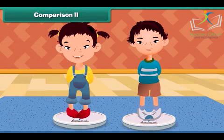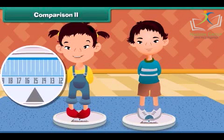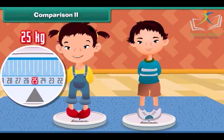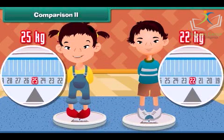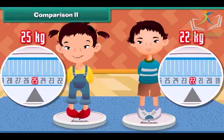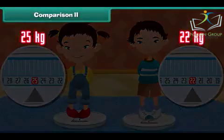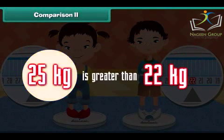Two children measure their weight. The weight of the first child is 25 kilograms and the weight of the second child is 22 kilograms. It is right to say that the weight of the first child is greater than the second one.